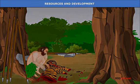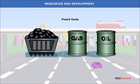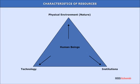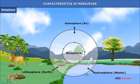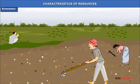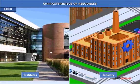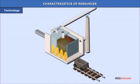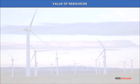Resources have certain characteristics which make them available and useful to man. Regarding the biosphere: resources come from our physical environment, and human beings are at the center of one component called the biosphere. Economically, human beings make resources available through their economic activities. Socially, human institutions, industry and society accelerate their development. Technology is the main human agent of transformation of materials available in nature into resources.